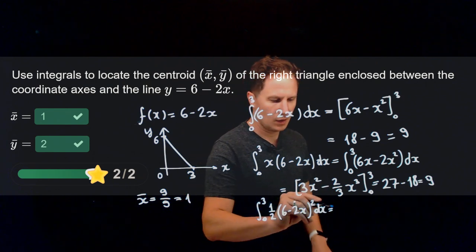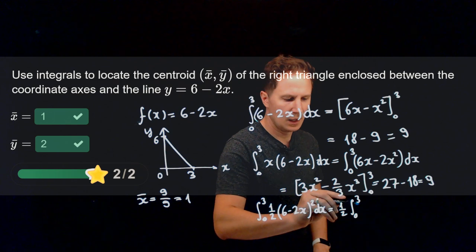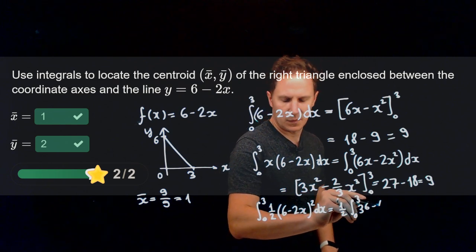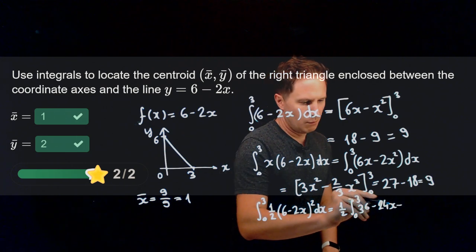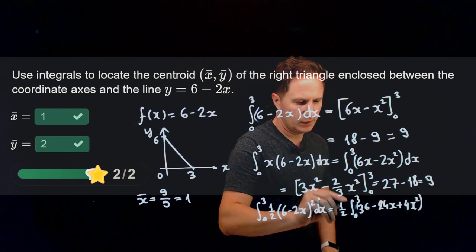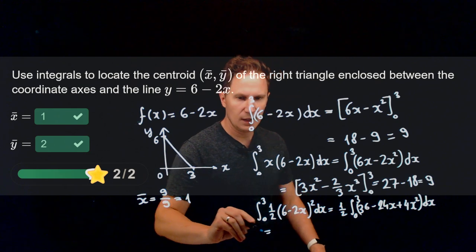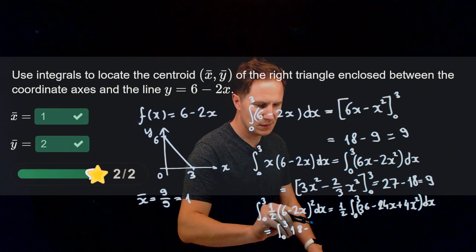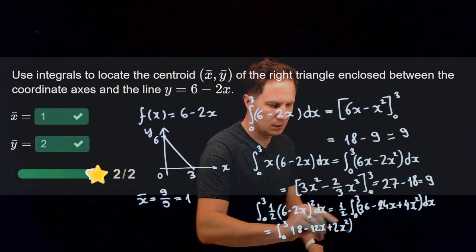Just expanding that product, we get half times the integral from 0 to 3 of 36 minus 24x plus 4x squared. Well, we can simplify by that factor of a half to get the integral from 0 to 3 of 18 minus 12x plus 2x squared dx.